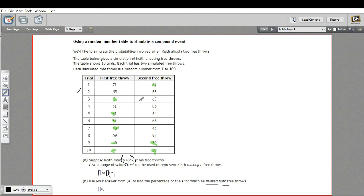Trial two, he missed both. Trial four missed both. Trial eight missed both. And I think that's it. So that's a little bit of work with a random number table. All right.